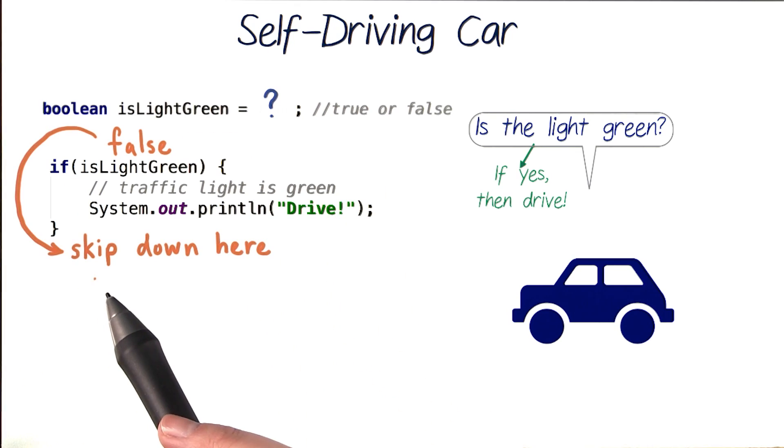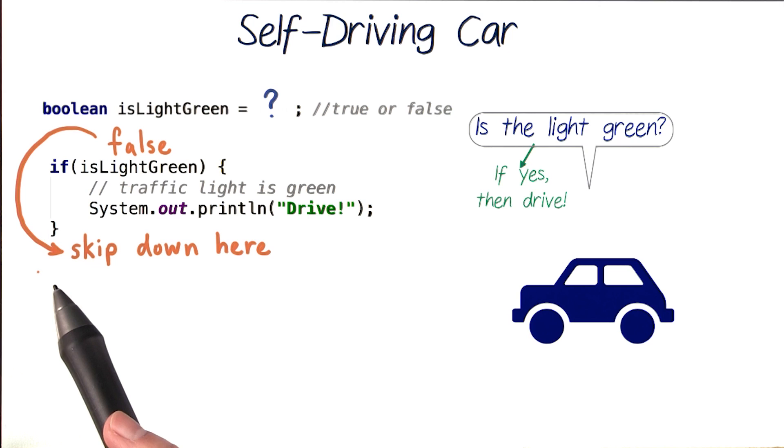If our test condition isn't met, if isLightGreen is false, Java will skip over our if code and go to the end of this closing curly brace. If there are more lines of code down here, it will continue reading from there.